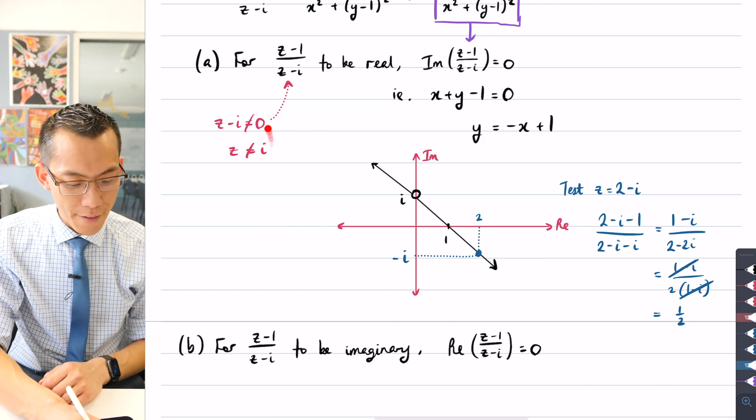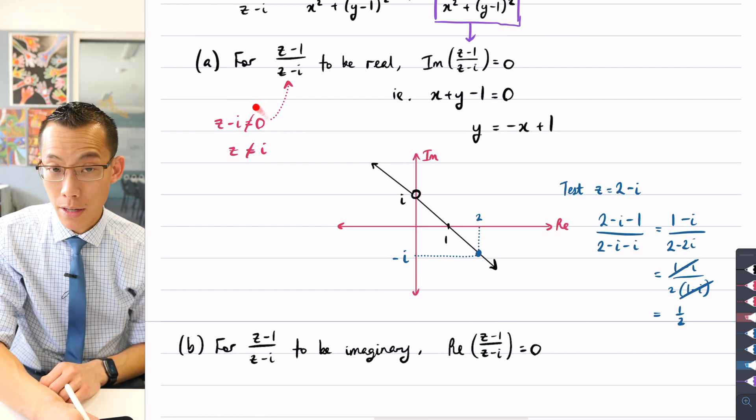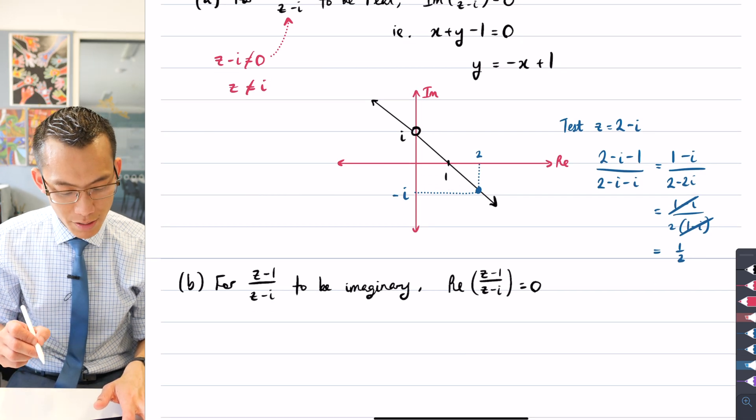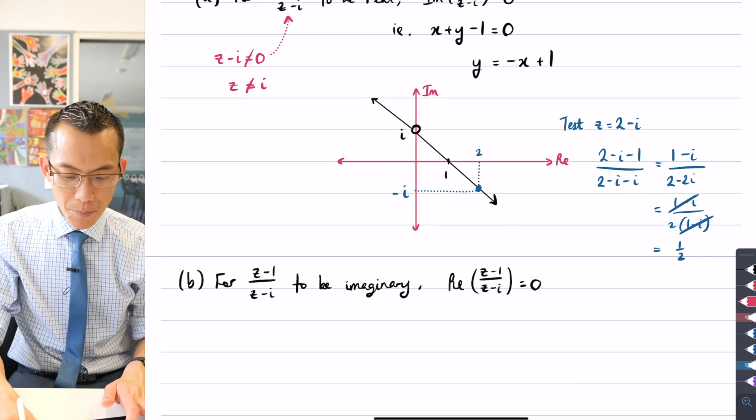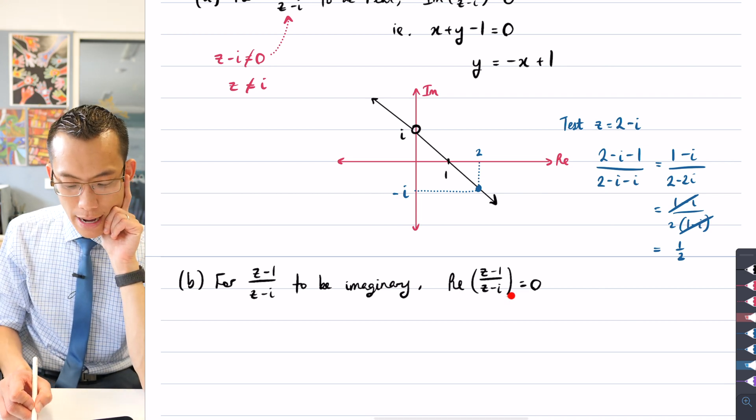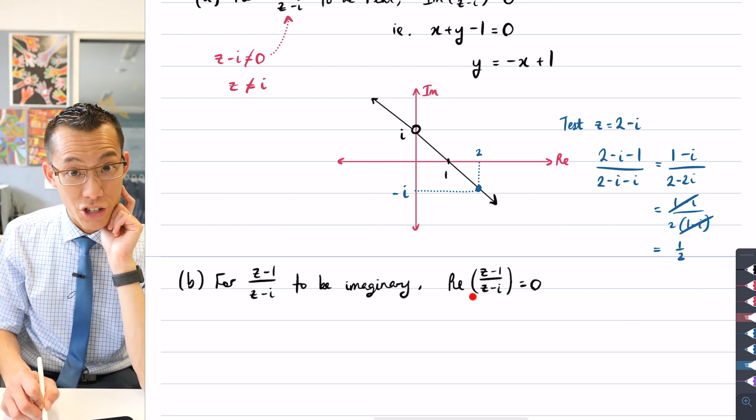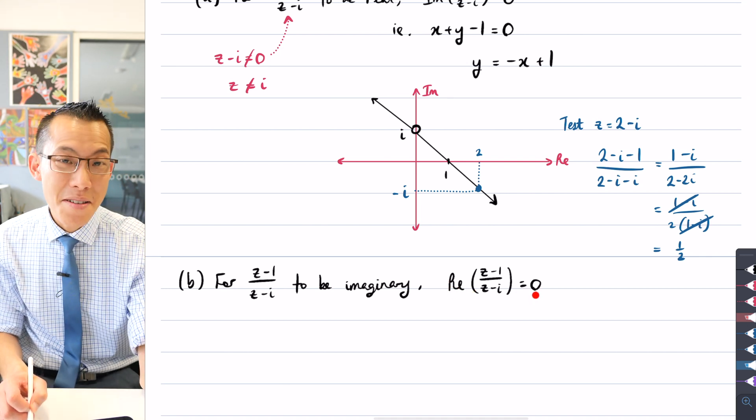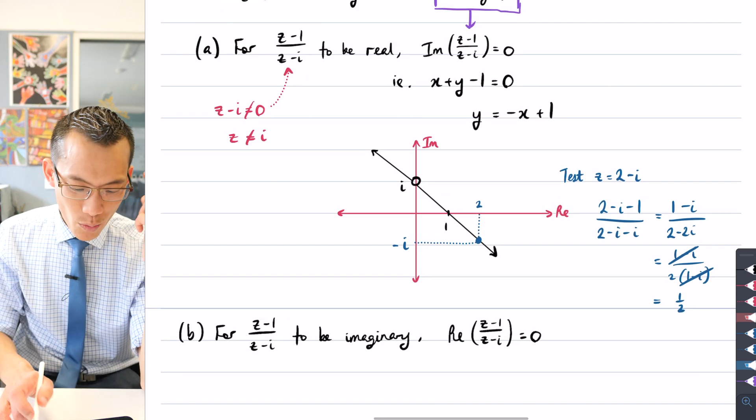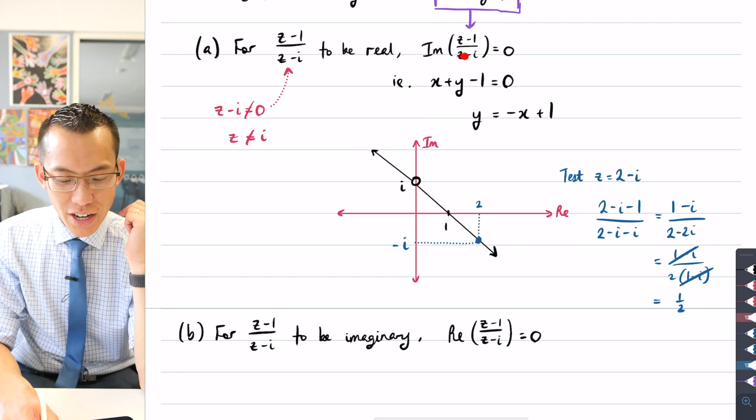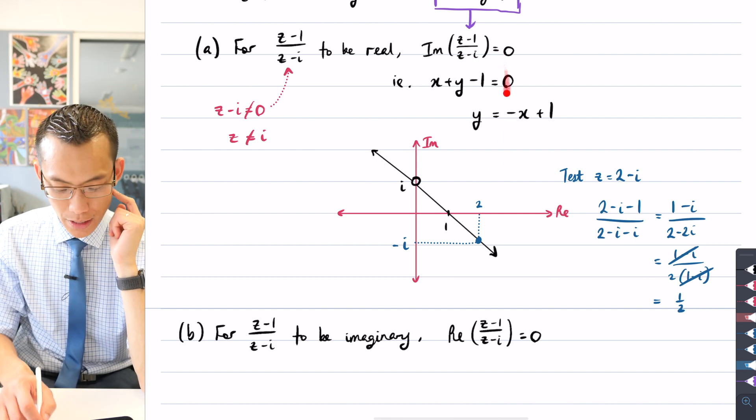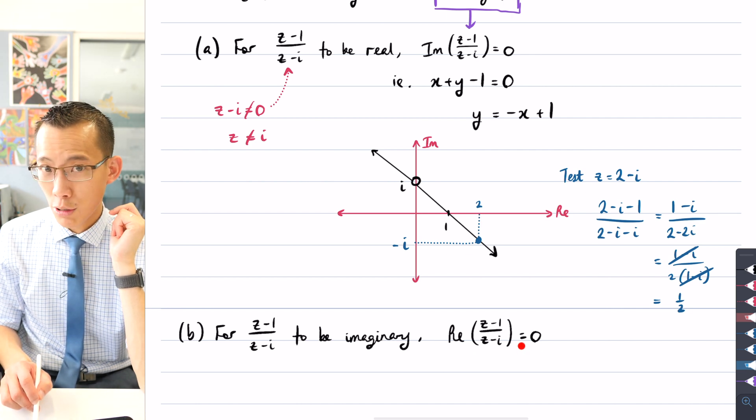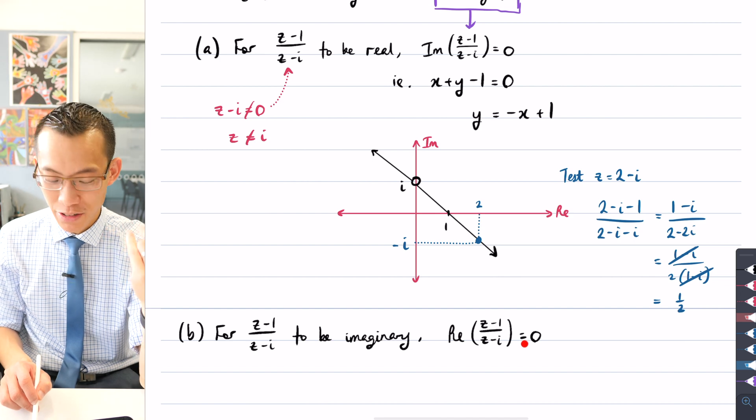We're going to have this same domain discontinuity that we had before, but in addition to that, you can see if I want z minus 1 over z minus i to be imaginary, there is a single case in which even though the real part is zero, you still might not get an imaginary number. And that is, if the real part is zero and also if the imaginary part is zero. If the imaginary part and the real part are both zero, then you're just looking at zero, that's not an imaginary number, that's a real number.